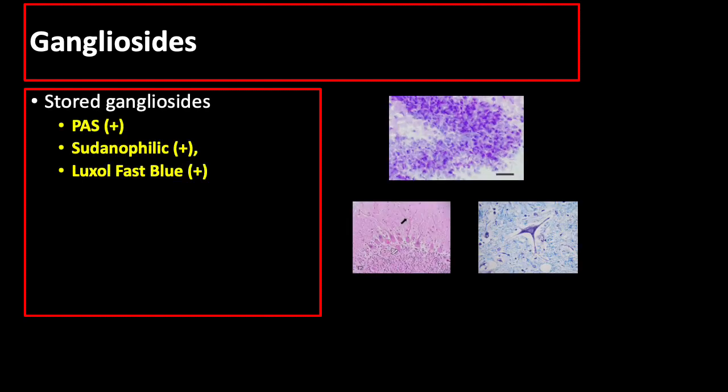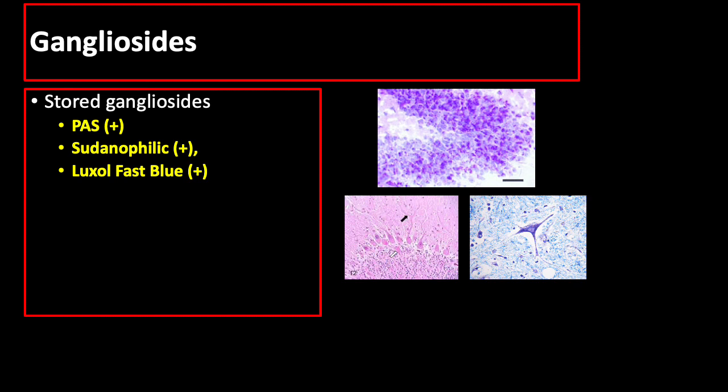Neurons may have significant ganglioside storage, giving rise to cells suggestive of gangliosidosis like Tay-Sachs disease and GM1 gangliosidosis. Stored gangliosides are stained PAS positive, sudanophilic positive, and Luxol fast blue positive. That concludes our lecture.